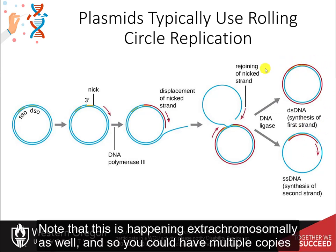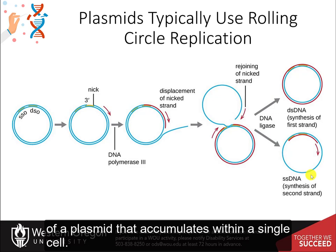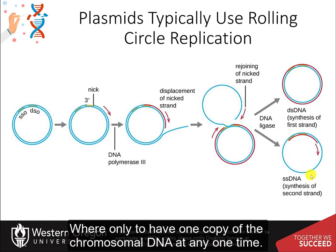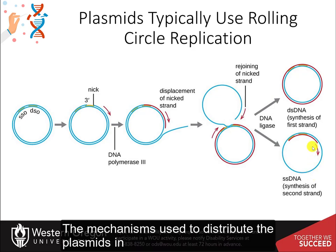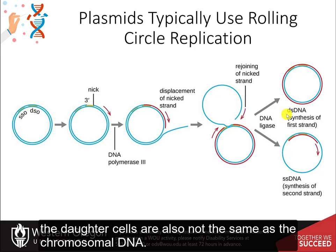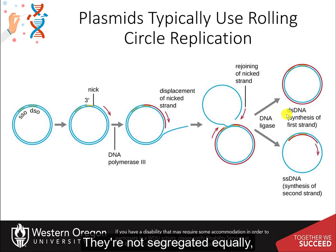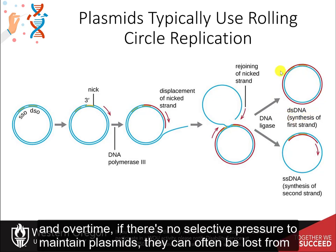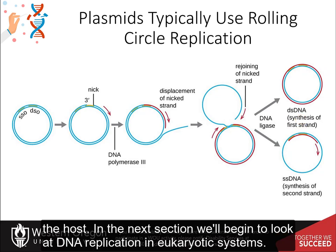Note that this is happening extra-chromosomally as well, and so you could have multiple copies of a plasmid that accumulate within a single cell, where you're only going to have one copy of the chromosomal DNA at any one time. The mechanisms used to distribute the plasmids in the daughter cells are also not the same as the chromosomal DNA. They're not segregated equally, and over time, if there's no selective pressure to maintain plasmids, they can often be lost from the host.